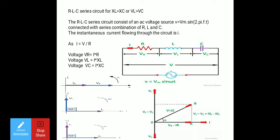Since the given condition is XL > XC, we know that VL > VC because VL = I·XL and VC = I·XC, and the current I is common to both. So if XL is greater than XC, then VL is always greater than VC. With this established, we can merge all three phasor diagrams together to form one resultant phasor diagram.